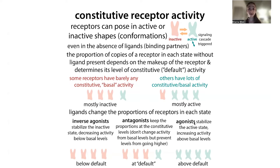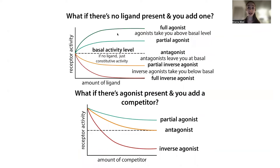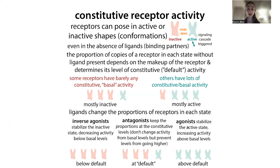If you add an agonist — the activating one — it stabilizes the receptor in the active state. The receptors are going back and forth between inactive and active states, and the agonist stabilizes the active state, so a higher proportion end up there. This gives you more activity above the basal level. Some agonists take you all the way to full activity, while partial agonists only go partway.